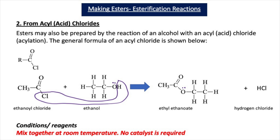Looking closely at this reaction, a H from the alcohol has joined with the Cl from the acid chloride to form hydrogen chloride gas. Once again, the oxygen in the ester attached to the C=O has come from the alcohol. Both reactions - the reaction of an alcohol with a carboxylic acid and the reaction of an alcohol with an acid chloride - are examples of esterification reactions.